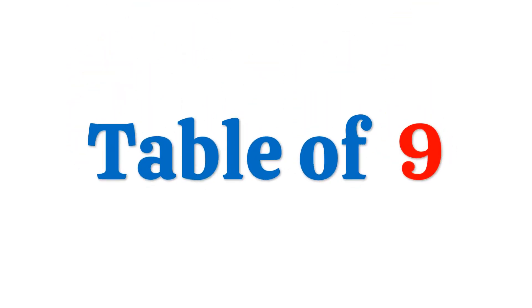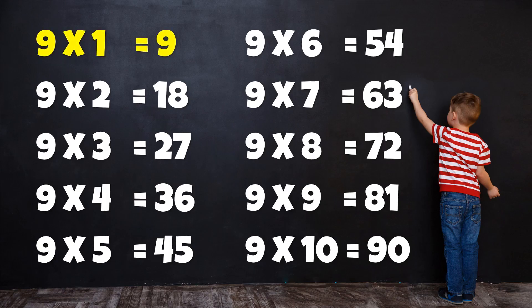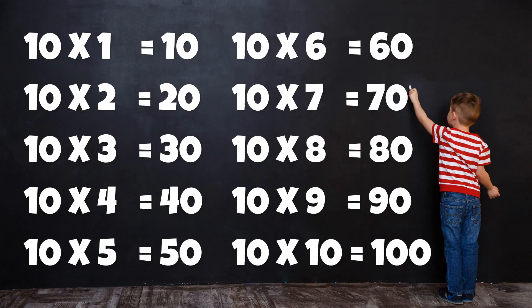Table of 9: 9 times 1 is 9, 9 times 2 is 18, 9 times 3 is 27, 9 times 4 is 36, 9 times 5 is 45, 9 times 6 is 54, 9 times 7 is 63, 9 times 8 is 72, 9 times 9 is 81, 9 times 10 is 90.